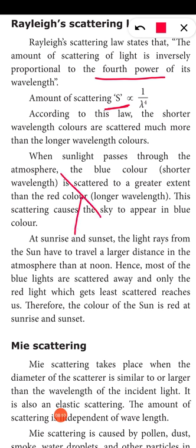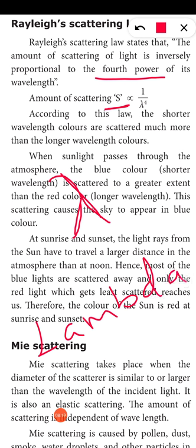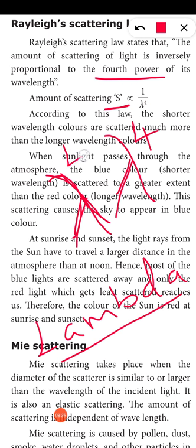Rayleigh proposed a law called Rayleigh's scattering law to explain the scattering of sunlight by air molecules. According to this law, the amount of scattering of light is inversely proportional to the fourth power of its wavelength. The wavelength is indicated by the symbol lambda (λ), so the amount of scattering is inversely proportional to λ⁴.